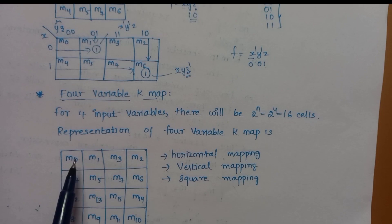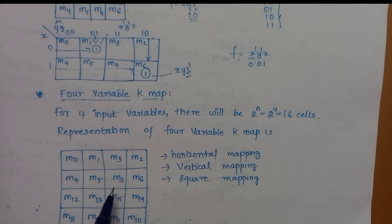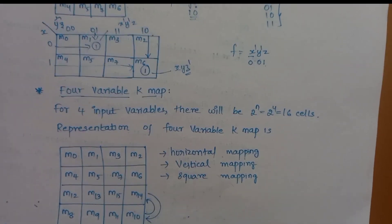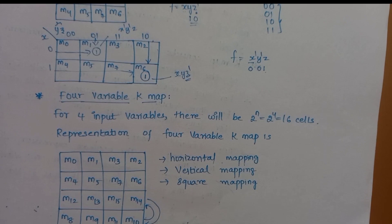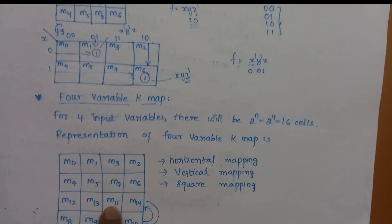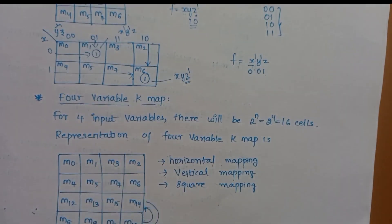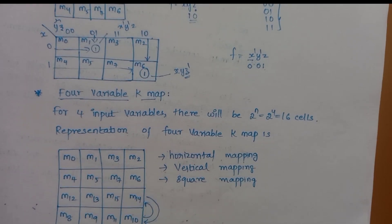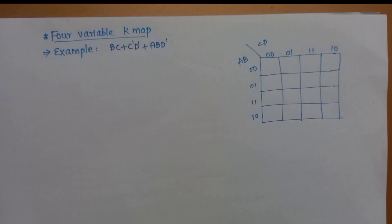The 4-variable K-map has cells m0, m1, m2, m3 — then m4, m5, m6, m7 exchanged. Next row: m8, m9, m10, m11 exchanged. Last row: m12, m13, m14, m15 exchanged. Note that the last two columns are exchanged (following Gray code). This gives us a 4-row by 4-column K-map structure.